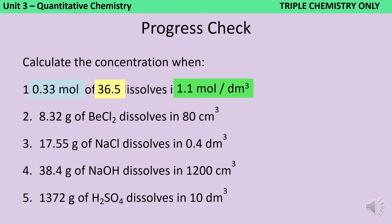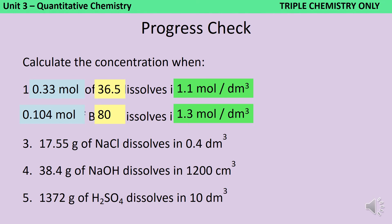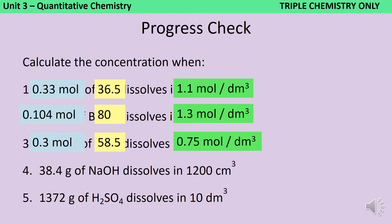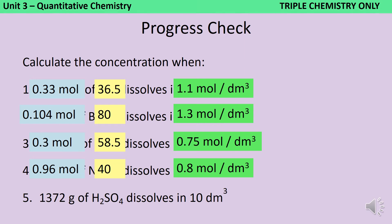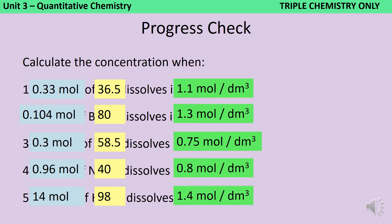Pause the video now and have a go at the next four on your own. The relative formula mass of beryllium chloride is 80, which means 8.32 grams is 0.104 moles; divided by 0.08 decimetres cubed gives 1.3 moles per decimetre cubed. Sodium chloride has a relative formula mass of 58.5; 17.55 grams is 0.3 moles, divided by 0.4 gives 0.75 moles per decimetre cubed. Sodium hydroxide has a relative formula mass of 40; 38.4 grams is 0.96 moles, divided by 1.2 gives 0.8 moles per decimetre cubed. Finally, sulphuric acid has a relative formula mass of 98; 1372 grams is 14 moles, divided by 10 decimetres cubed gives 1.4 moles per decimetre cubed.